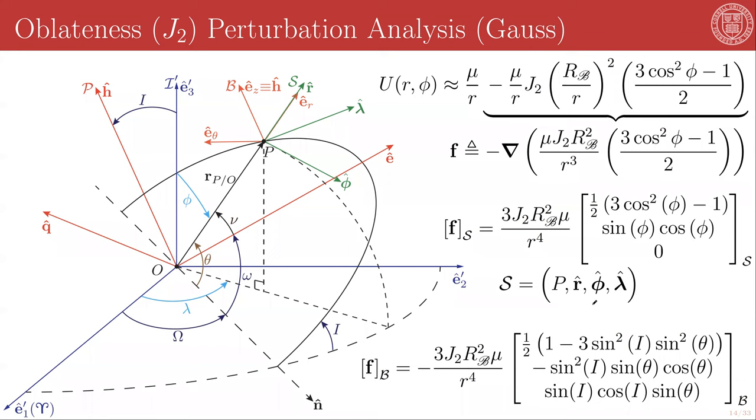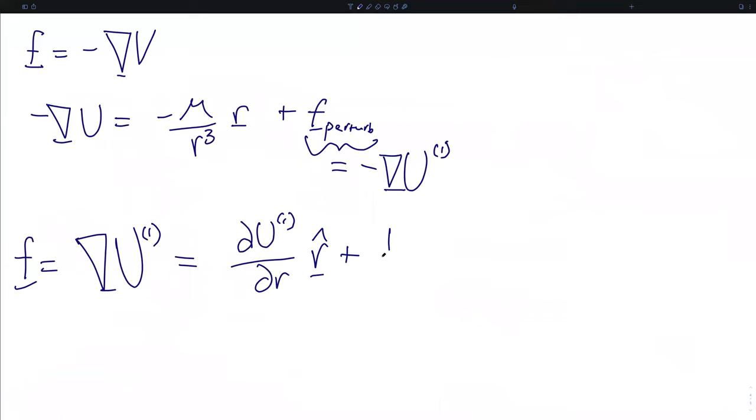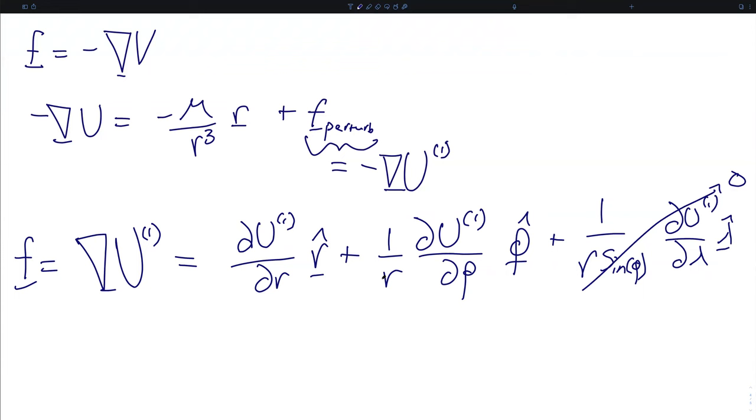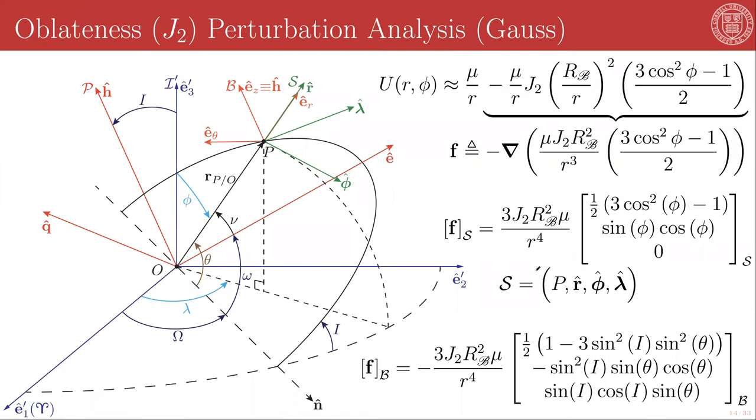Using this frame definition, we can write down the spherical coordinate version of our gradient: the partial of the perturbing potential with respect to R in the R hat direction, plus one over R times the partial of the perturbing potential with respect to phi in the phi hat direction, plus one over R sine phi times the partial of the perturbing potential with respect to lambda in the lambda hat direction. But in this case, there is no lambda dependence in the perturbation, and so this term is strictly zero. We evaluate these two terms and can then write down this expression for the components of the perturbing force in the S frame.